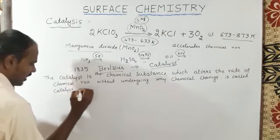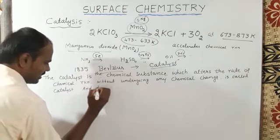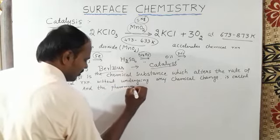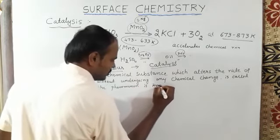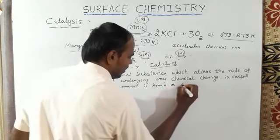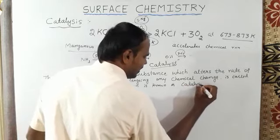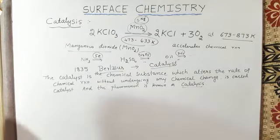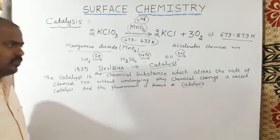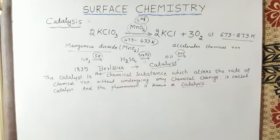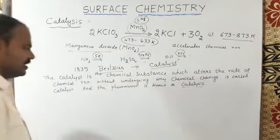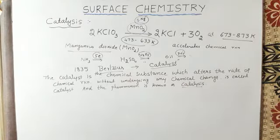Catalyst. And the phenomenon is known as catalysis. So the definition of catalyst is: a catalyst is a chemical substance which alters the rate of the chemical reaction without undergoing any chemical change, and the phenomenon is known as catalysis.